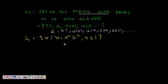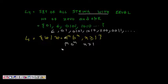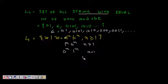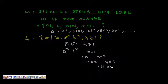Another language, L5, is written as 1^n 0^n where n ≥ 1. This means n ones followed by n zeros. For n=1: '10'; n=2: '1100'; n=3: '111000'. This set is also infinite.